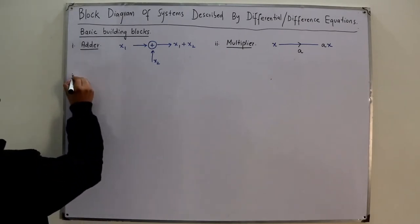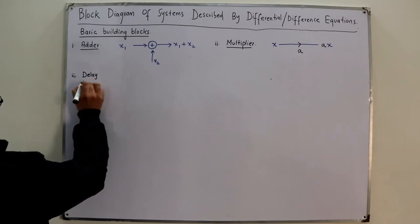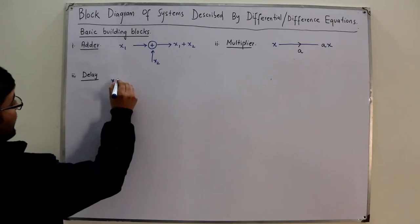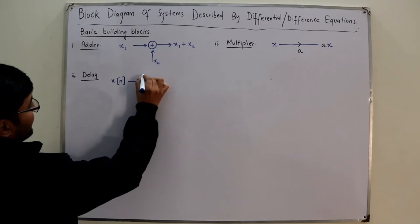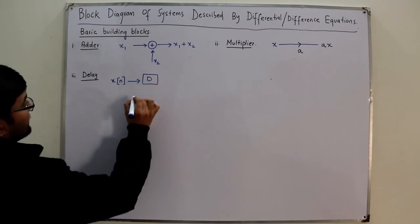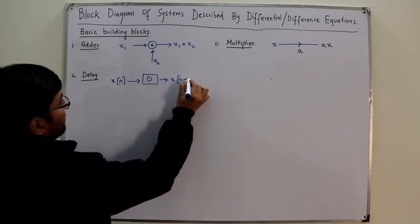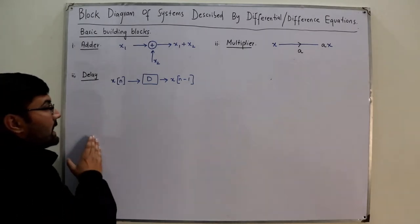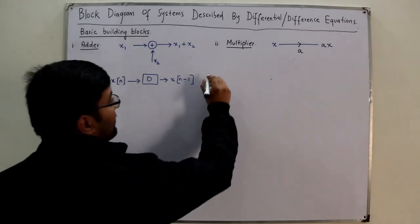The third building block is the delay — specifically the unit delay for discrete time. If you have a signal x(n) and give it to a delay block, represented by a block labeled D, the output is x(n−1). This is the unit delay, also called the first difference, for the discrete time case.